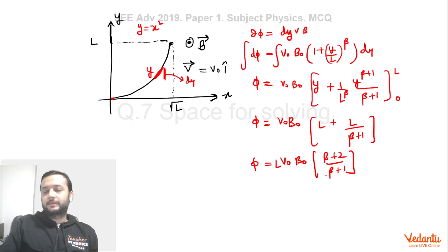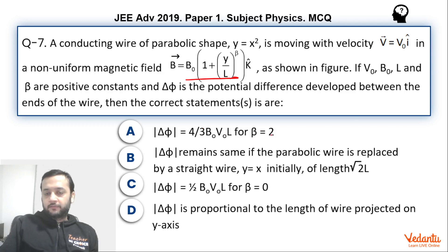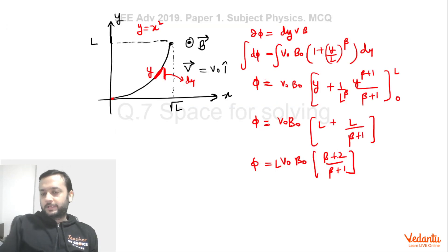So v₀B₀L times (β+2)/(β+1). Now if you go back to the options, for β equals 2, if you put β equals 2, this becomes 4/3 and hence option A is right. Absolutely right.